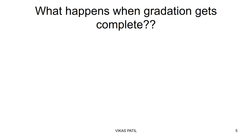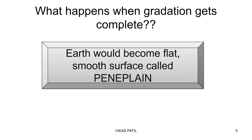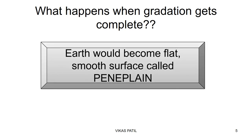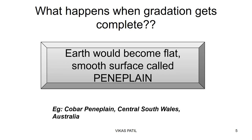What would happen if the gradation is complete? If somehow nature is able to make the entire land flat? We will come to something known as a penny plane, where the earth would be absolutely flat. Of course it's not possible — earthquakes and volcanic eruptions will never let it happen. There is a miniature form of penny plane in Australia, the copper penny plane, wherein the land looks absolutely flat as far as you can see, your skyline absolutely flat. This gives us an idea about how a penny plane would look.